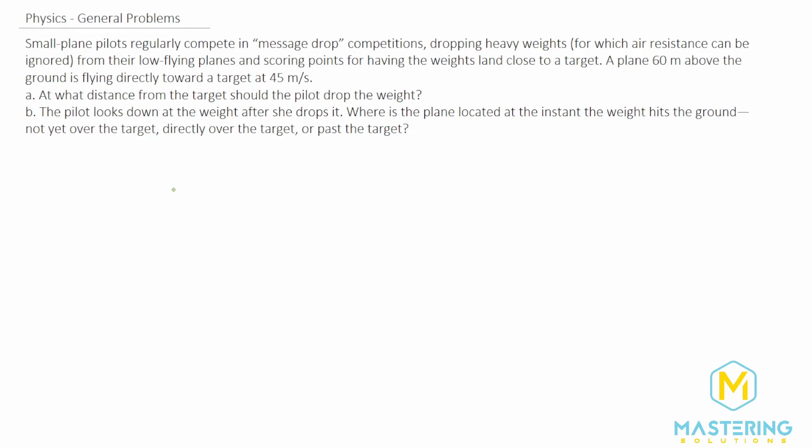For part A what we need to do is we need to figure out how long will it be in the air for. To do that we'll look at only the y component of the fall. So we have y final is equal to y initial plus the initial velocity in the y direction times the time plus one half the acceleration times the time squared.